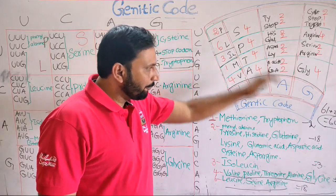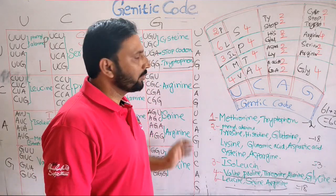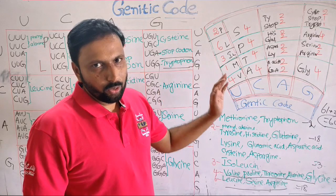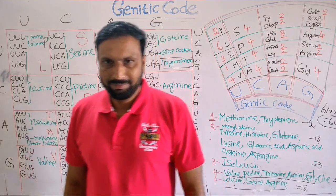These 61 sense codons code for 20 amino acids. So, this is the total clarity about the genetic code. Thank you all.